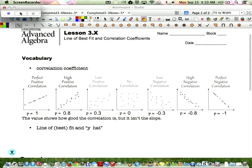We're continuing with the line of best fit from the 3.3 lecture. We just started talking about lines of best fit, and now we're adding in what's called a correlation coefficient.